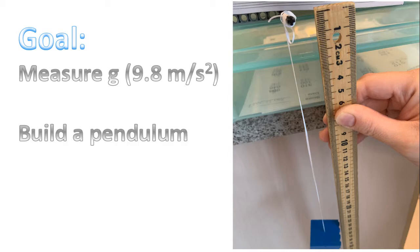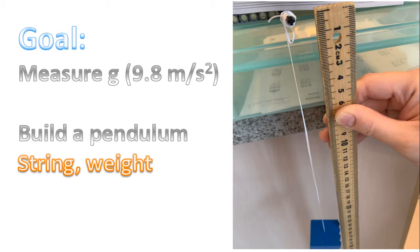To do this we need to build the pendulum. To build the pendulum all that we need is a string and a weight. For the string, I use some dental floss, that's all I had. And for a weight, I use some Lego. But you could find materials at your home to build a pendulum as well.